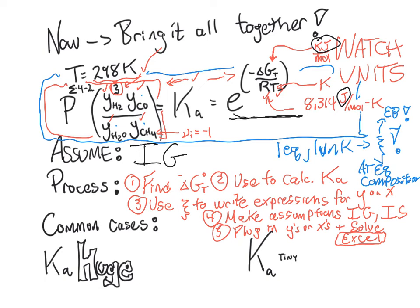There are two common cases where you don't have to actually go to the trouble of using Excel or even your calculator. One of those cases is where Ka is huge. When Ka is huge, that means ξ goes to ξ max. Remember, we used to work out what the maximum ξ would be. Usually that means limiting reagent is completely consumed. The reaction proceeds all the way towards the products.